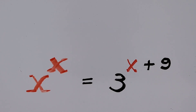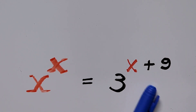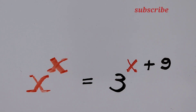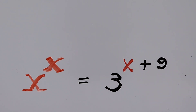Hello everyone, we have here the exponential equation x to the power of x equals 3 to the power of x plus 9. In this video we'll be solving for the value of the variable x that satisfies the equation. For those new to my channel, I would appreciate it if you can hit the like button and subscribe for more videos. Thank you very much.